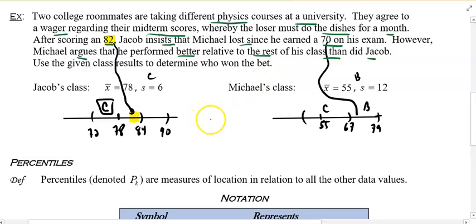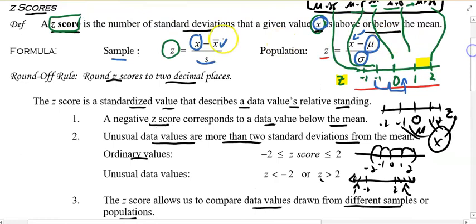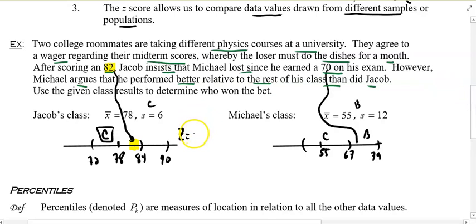Instead of doing what I just did, I could say, instead of doing all of this work, let's find the z-score for Jacob. X minus the average divided by the standard deviation. So we take X, which is a score of 82, minus the average divided by a standard deviation of 6. Plug that in your calculator. That tells you his score is 0.67. Those are the C ranges. The B is right there. And the A is right there.